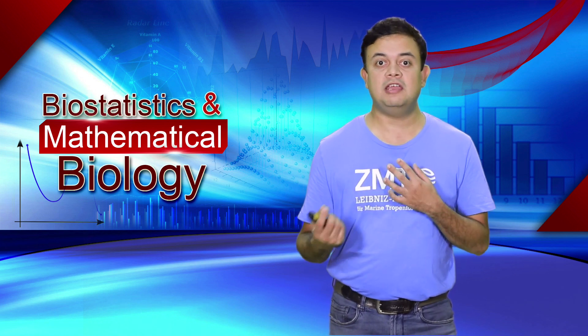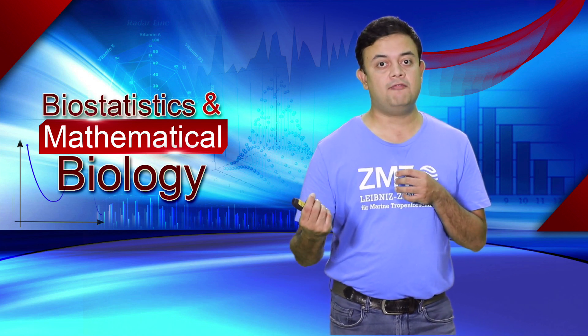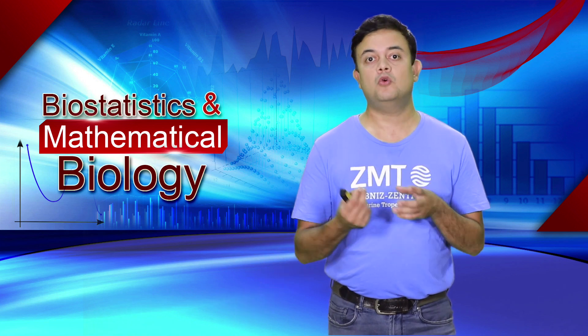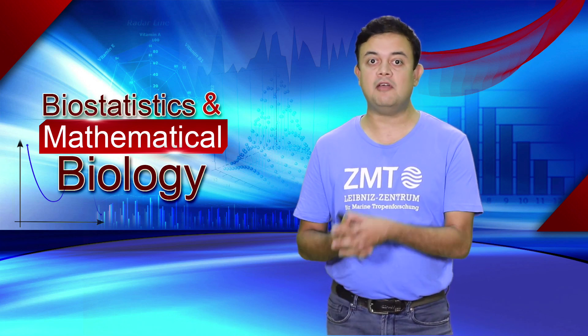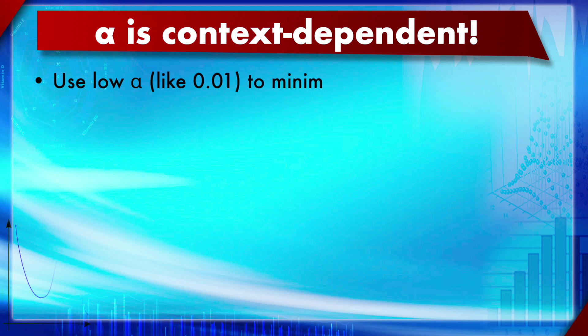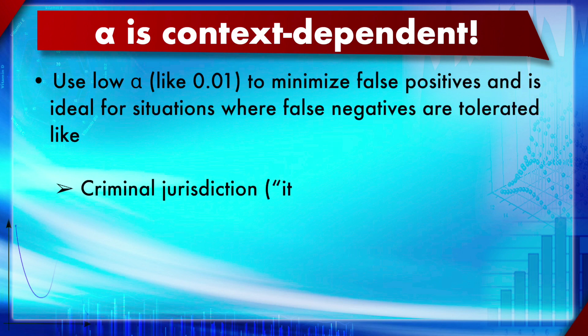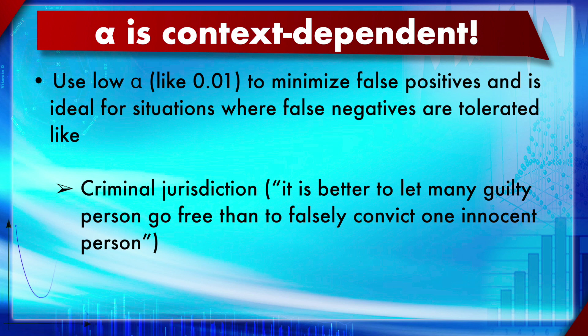It is all give and take: high alpha has its own problems, and so does low alpha. It depends on context — case by case. You can use a low alpha like 0.01 to minimize false positives, and it is ideal for situations where false negatives are tolerated, because the consequence is increased false negatives.